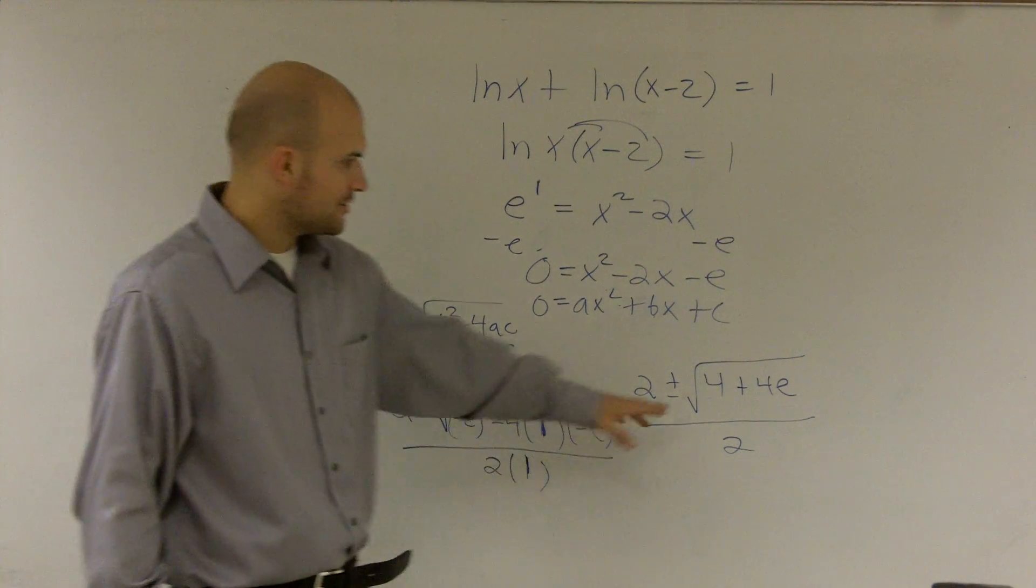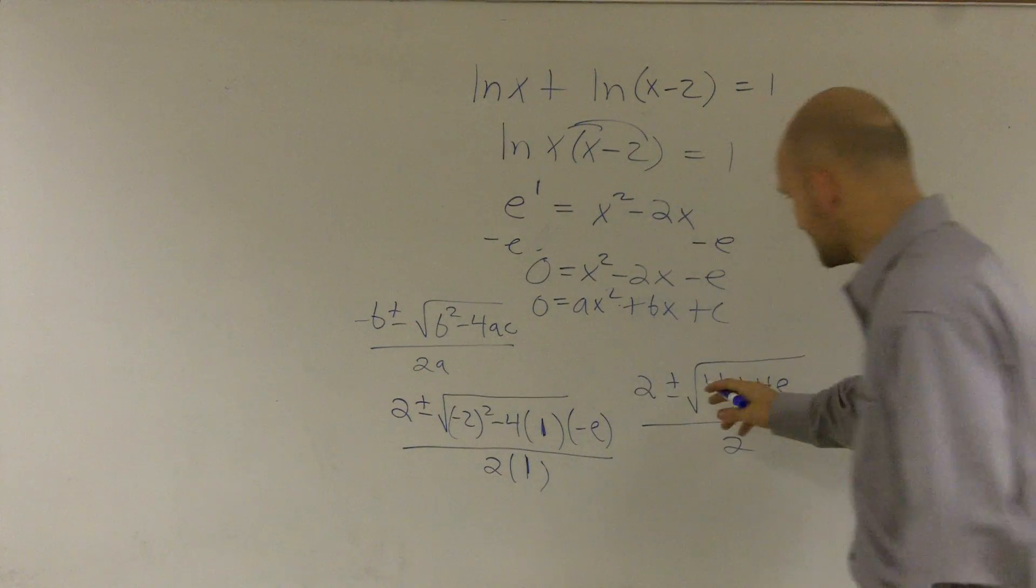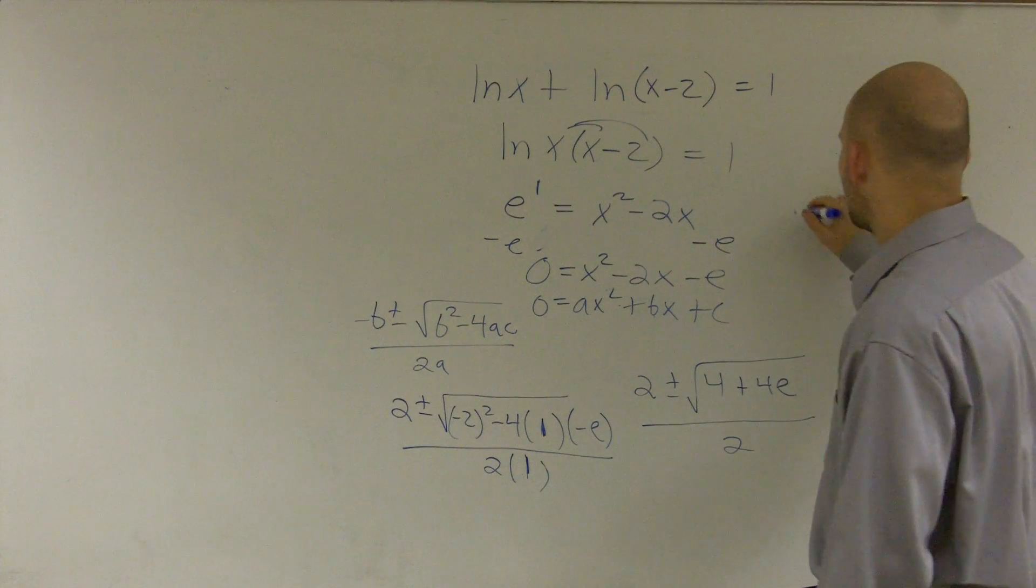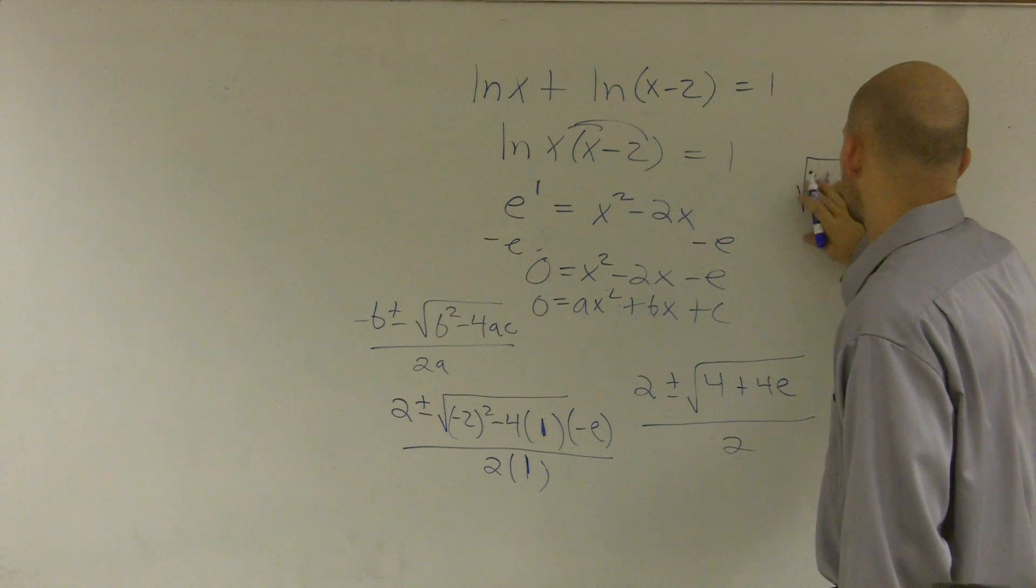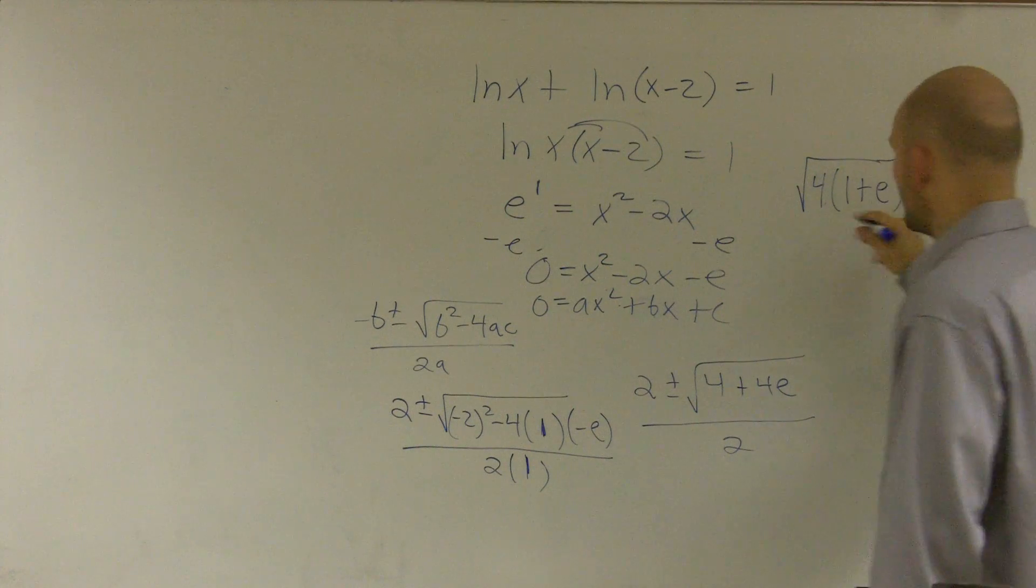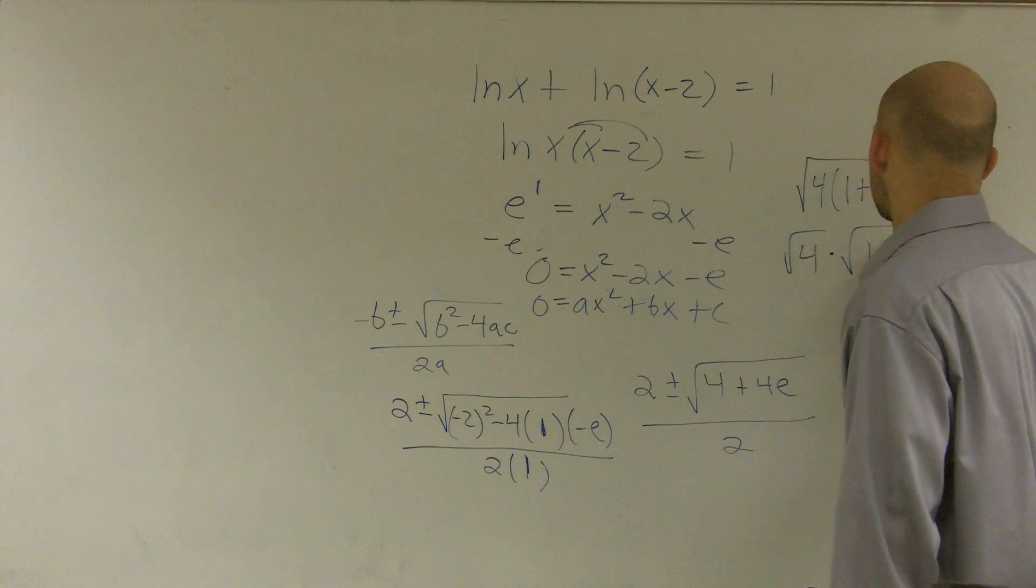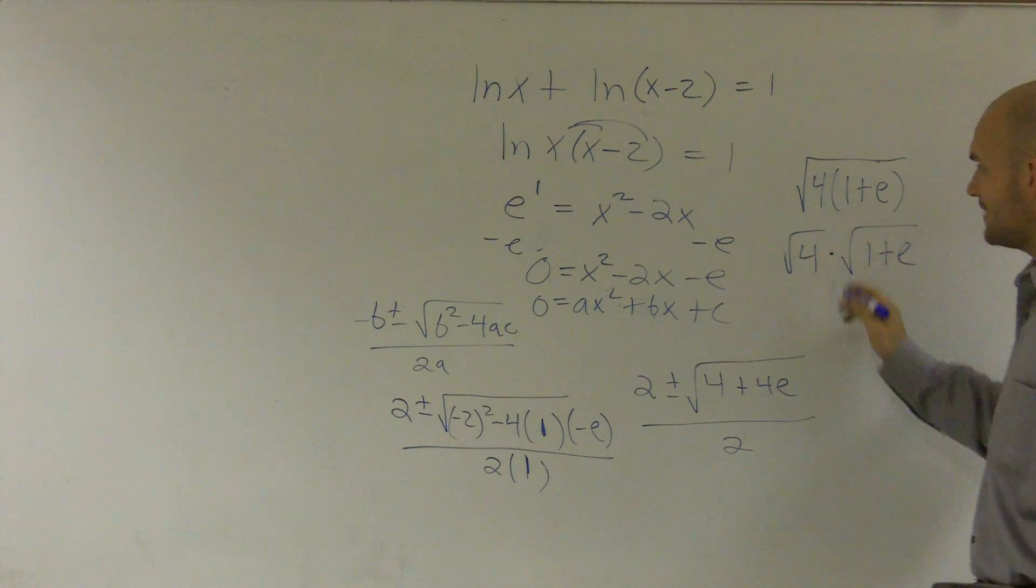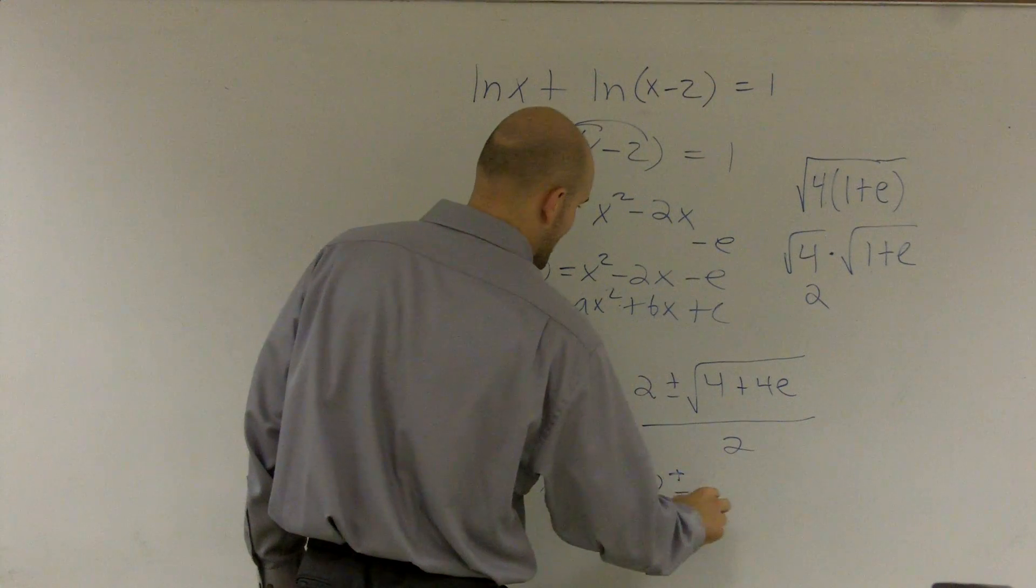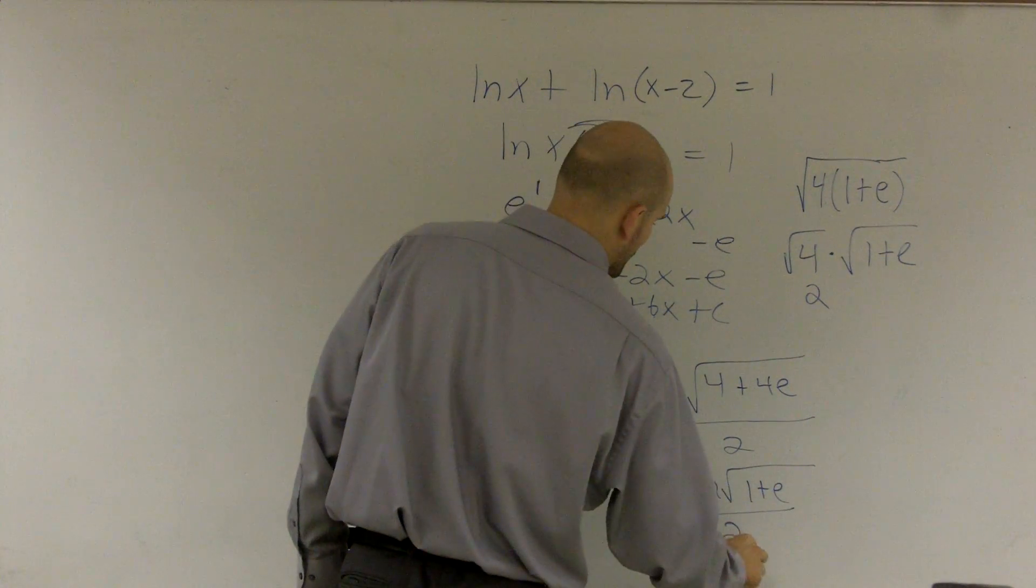Now, here, what I can do is I can break this apart. And let's be careful with this. You can't separate the square root of 4 plus the square root of 4e. However, we can write this as a multiplication problem. Then I can rewrite it as square root of 4 times square root of 1 plus e. Then that allows me to write that as a 2. So therefore, I really have 2 plus or minus 2 multiplied by square root of 1 plus e all over 2.